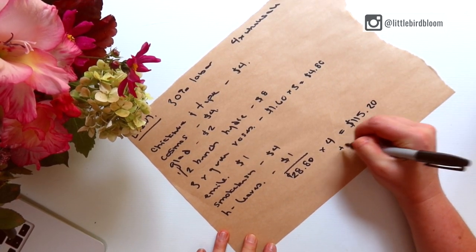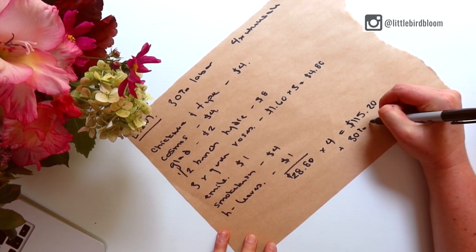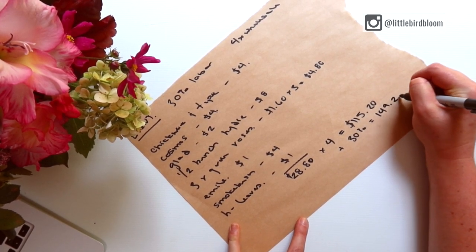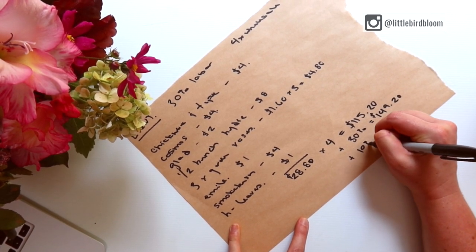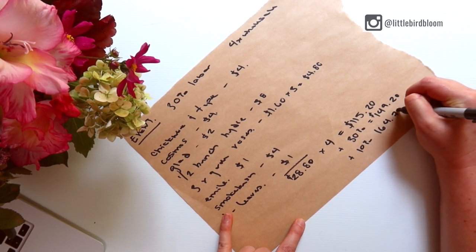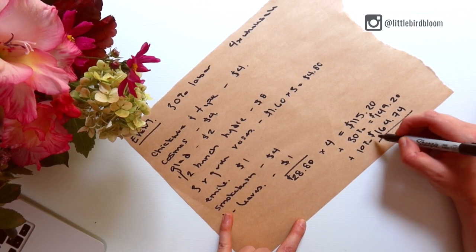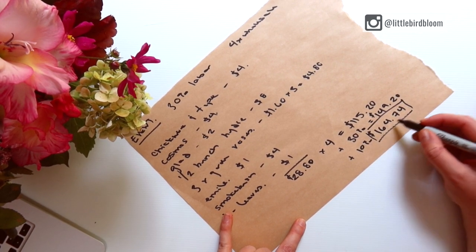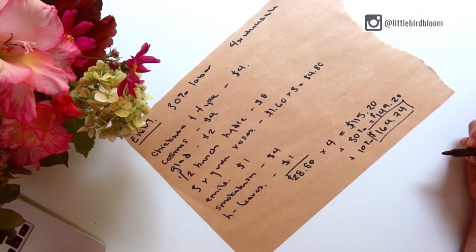So based on that equation we are then going to multiply $28.80 times four, then we're going to add 30% labor, then because it's Australia we are adding 10% tax. So the total that you come to is $164.74 or I would round that up to $175 for this size of arrangement and remember that does not include any higher fee or the cost of your container.